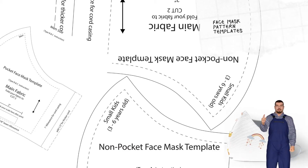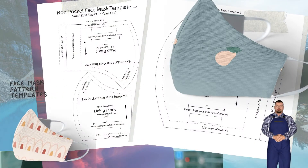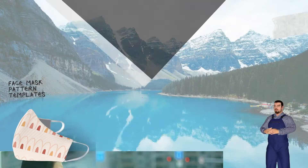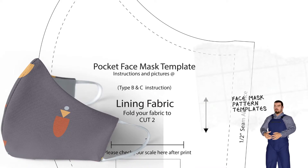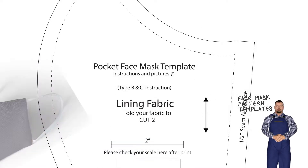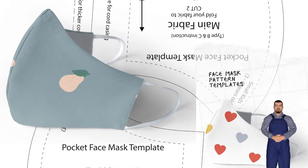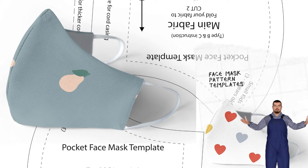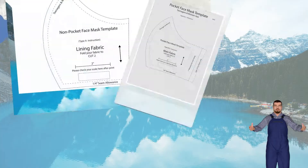Face Mask Pattern Templates: free downloadable face mask pattern in various options. Please click to download and print separately. Type A: normal face mask. Type B: face mask with a pocket for filter insert or as a surgical mask cover. Type C: add on a removable nose wire to Type A and Type B.